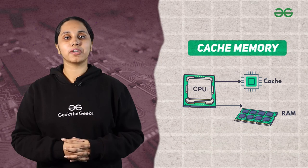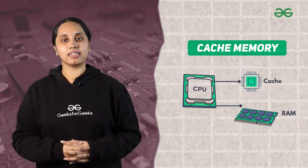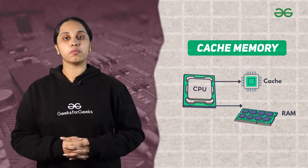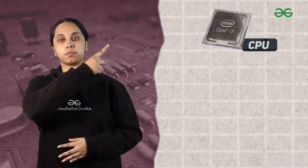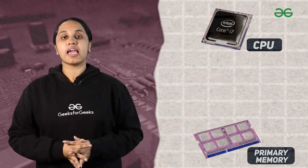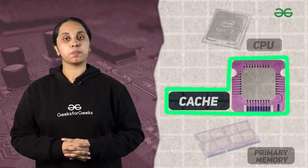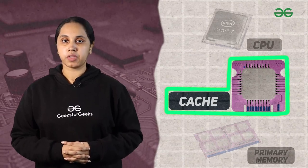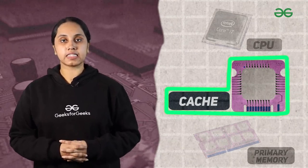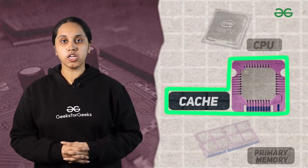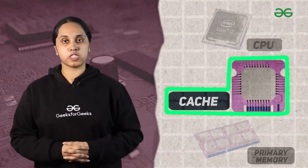Hello everyone, welcome to GeeksforGeeks. In this video we would get to know about cache memory, so let's start. Cache memory is a memory which is located between CPU and primary memory. Cache memory is a smaller segment of memory, so it also works as buffer memory. Cache memory has access time faster than primary memory, so it is also known as fast memory.